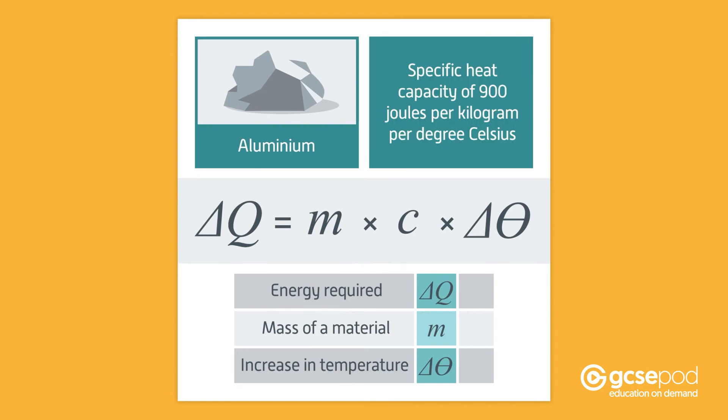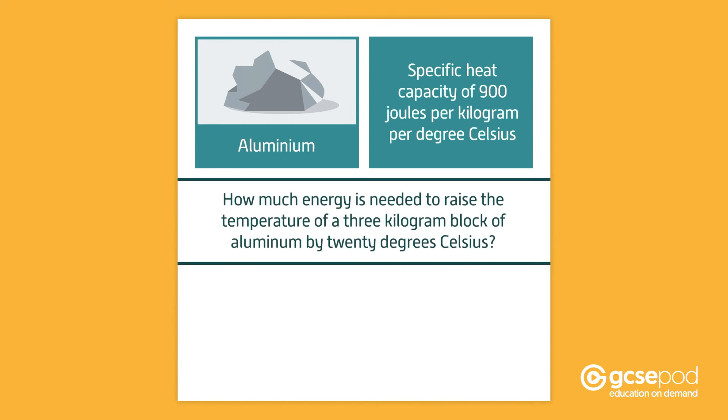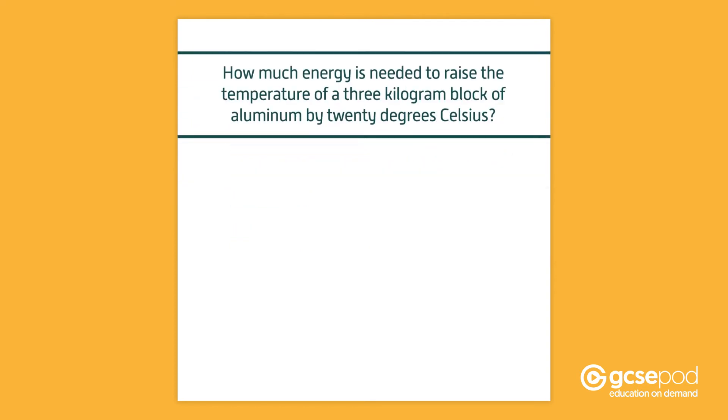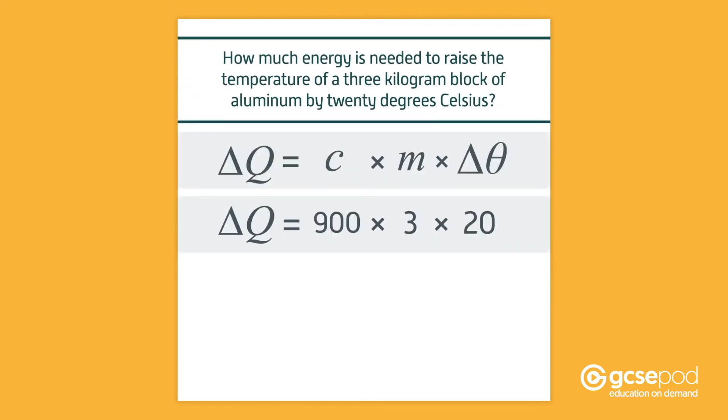For example, if the specific heat capacity of aluminum is 900 joules per kilogram per degree Celsius, how much energy is needed to raise the temperature of a 3 kilogram block of aluminum by 20 degrees Celsius? Delta Q equals 3 multiplied by 900 multiplied by 20, which equals 54,000 joules. This is 54 kilojoules.